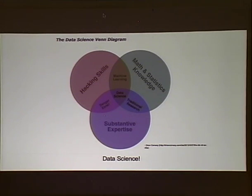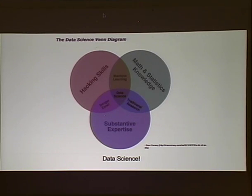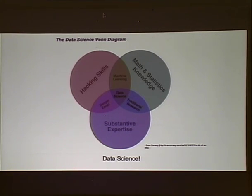Brief introduction: when we talk about data science, what are we talking about? We're talking about people who really like to tinker, who understand math and statistics, and people who understand things about a subject. Brian has a crazy wealth of statistics and math knowledge. I have enough to be dangerous. I might be the subject matter expert, and we both really love to tinker with things. Hopefully it pays off for everybody. I'm Mike Sconzo. That's Brian Wiley.